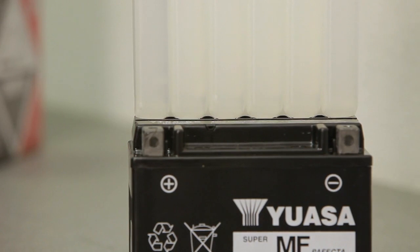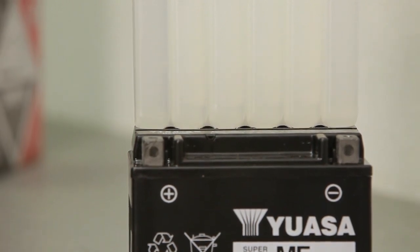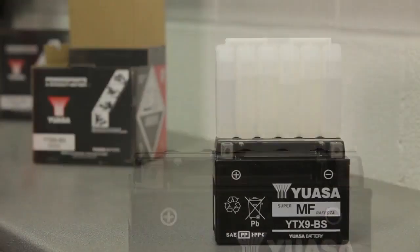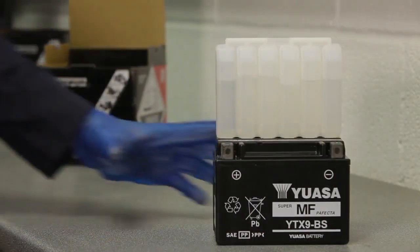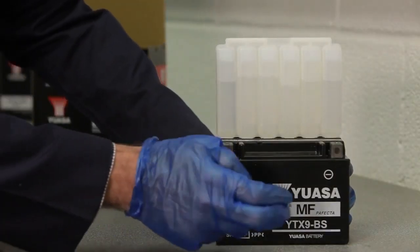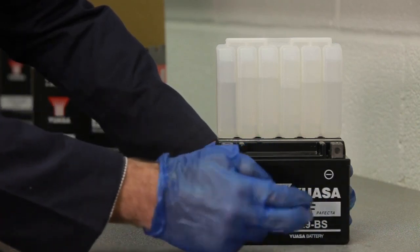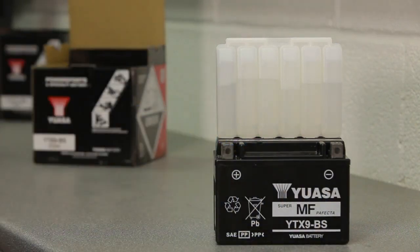Air bubbles should be rising in each of the cells, indicating that the electrolyte is flowing into the battery. If there are no bubbles, tap the container a few times, being careful not to tilt or squeeze it, as this may cause the cells to fill unevenly.